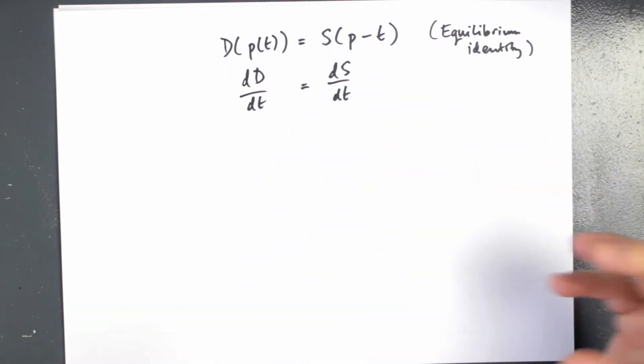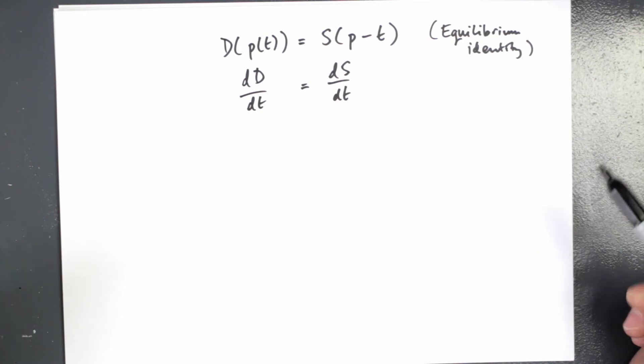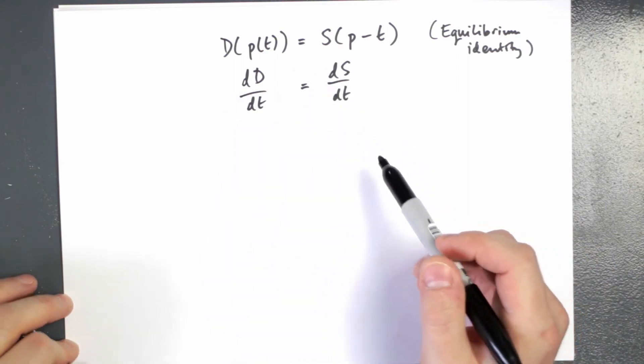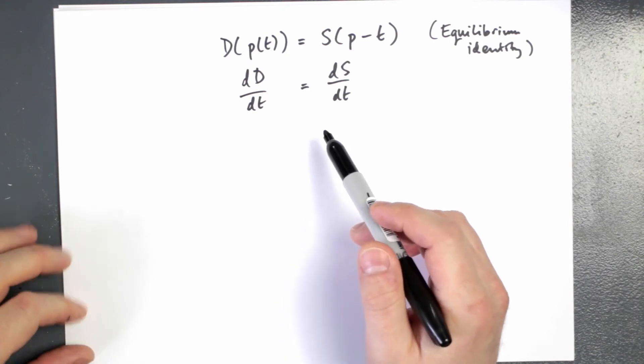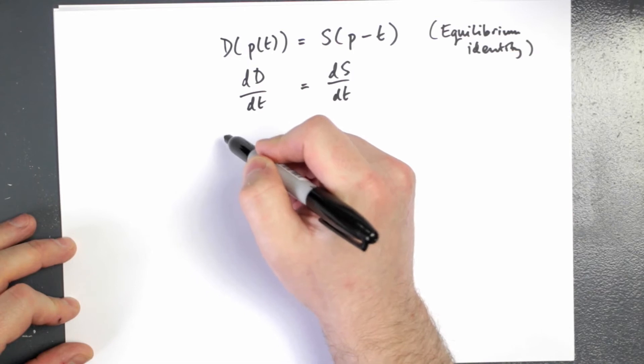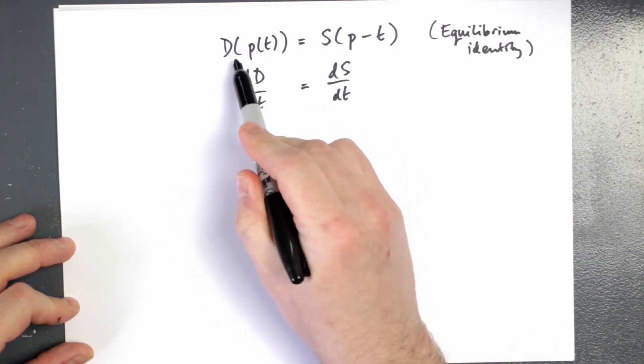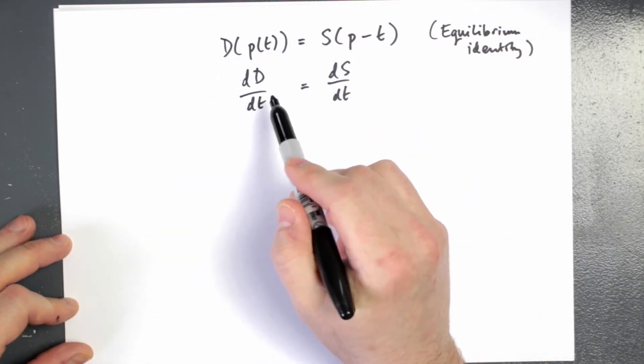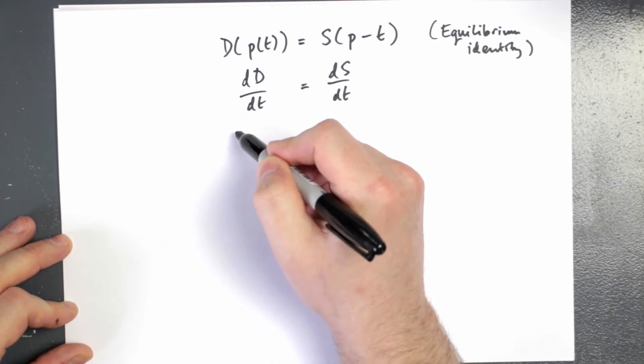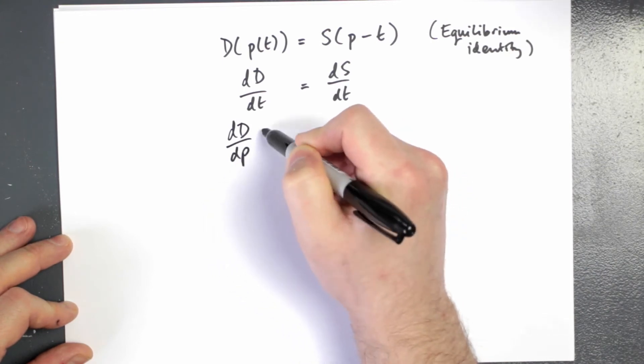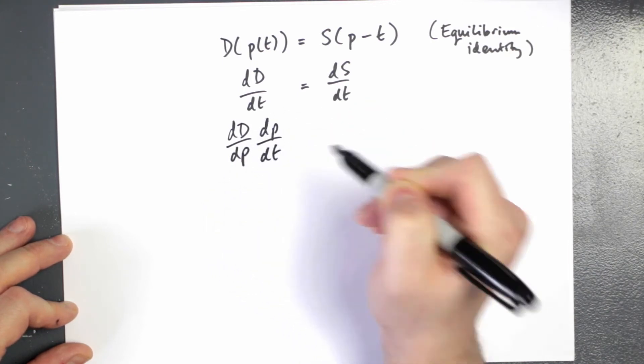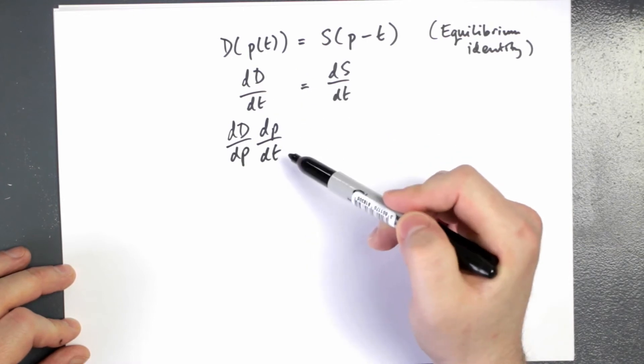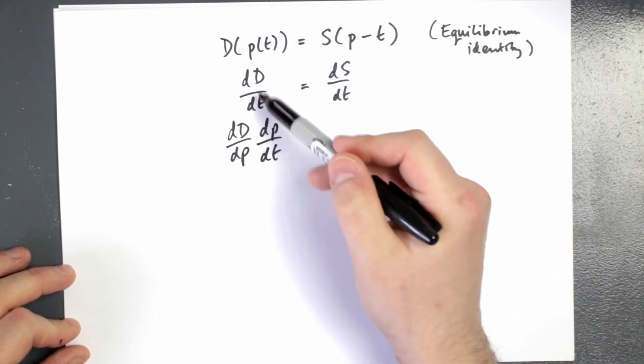And implicitly we're saying the price will be changing to maintain this identity so that these two are still true. So let's analyze this term a bit more. Here we've got the derivative of demand with respect to tax. We could notice here we have kind of a function of a function. So demand depends on the price, which implicitly through this equilibrium identity depends on the tax as well. So we could write the change in demand as price changes multiplied by the derivative of price with respect to the tax. That's simply using the chain rule to know that these two things are equal to each other.